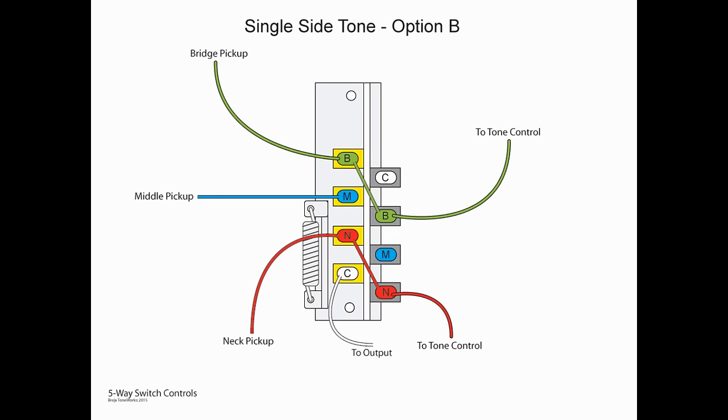Now some people prefer to use option B, which is to run a jumper wire from the bridge lug on the left side to the bridge lug on the right side, and run that to the tone control. Same thing shown here with the neck pickup. In effect we're doing the exact same thing as we did with the mod on the other side. It does give us a little bit more flexibility, but we'll see a better way to do that just shortly.